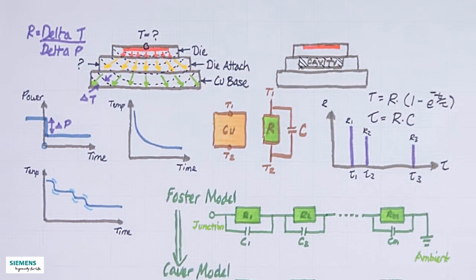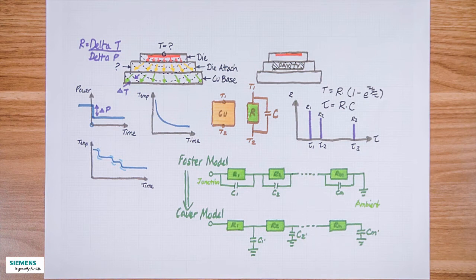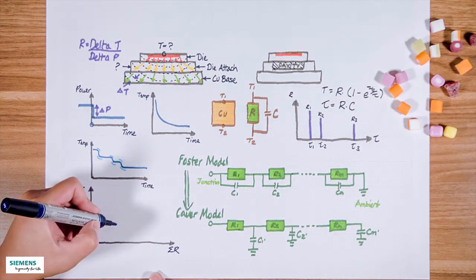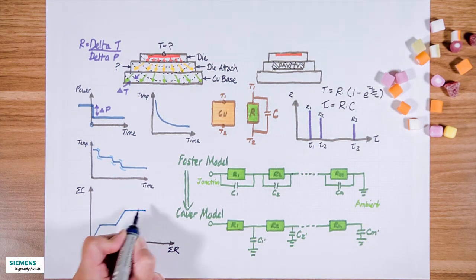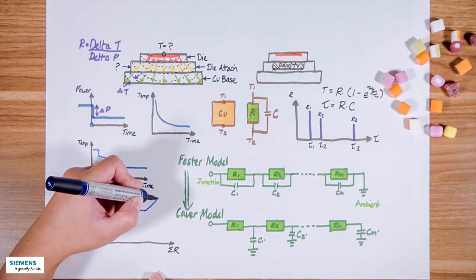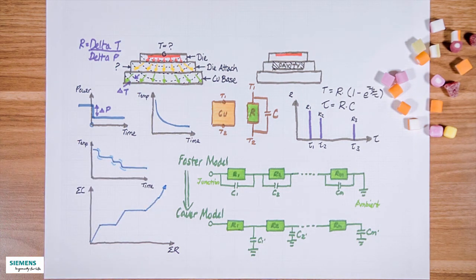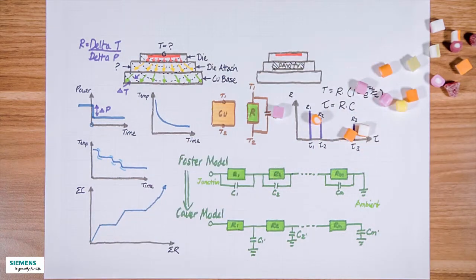How do we get the full structure function out of it? Along this axis is the sum of the capacitances of the ladder model, and along the bottom is the sum of the resistances. The heat propagates from here, then goes into a resistance and some capacitance, so the curve starts to go up. Then there is more resistance and capacitance, so the curve goes up again.